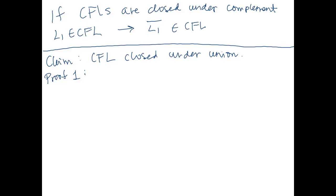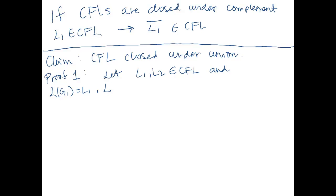We're going to use grammars to prove this. Let L1 and L2 be elements of the context-free languages. We're going to have two grammars. Let the language of grammar G1 be L1, and the language of grammar G2 be L2. So G1 and G2 are context-free grammars.